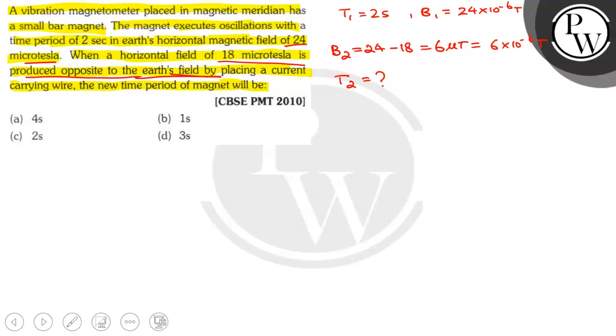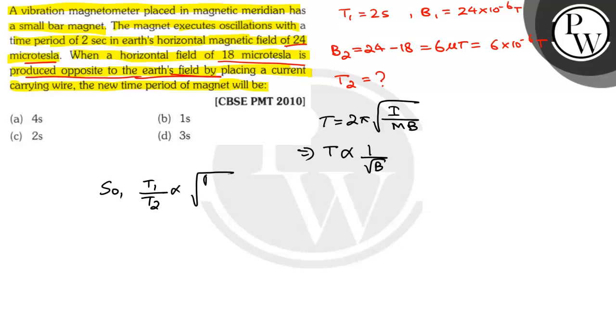So, time period is equal to 2 pi root under I by mB, and time period is inversely proportional to root over B.